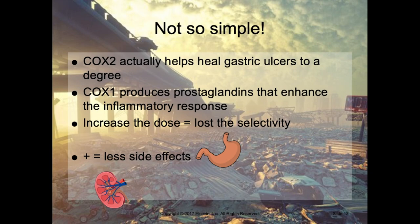However, it's not that simple. It's been found that in mice, COX-2 can actually help heal gastric ulcers, and COX-1 has been found to produce some prostaglandins that enhance inflammation. Additionally, most drugs with selective COX-2 inhibition lose some or all selectivity as the dose increases. Still, COX-2 selective inhibitor NSAIDs do have some advantage over non-selective COX inhibitors in terms of fewer side effects on the stomach and kidney at normal doses.